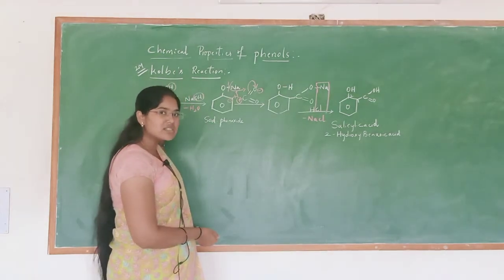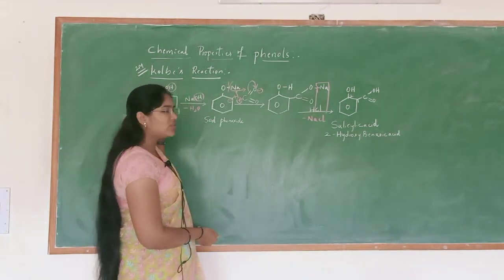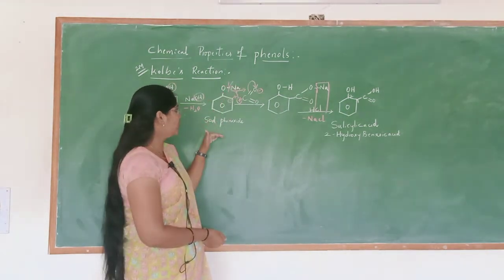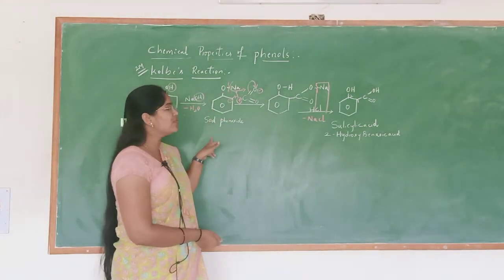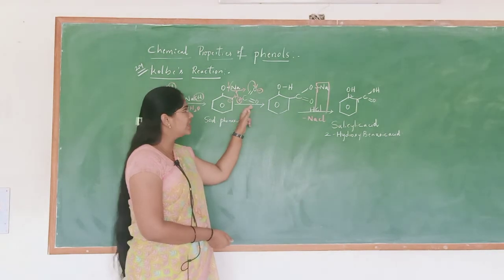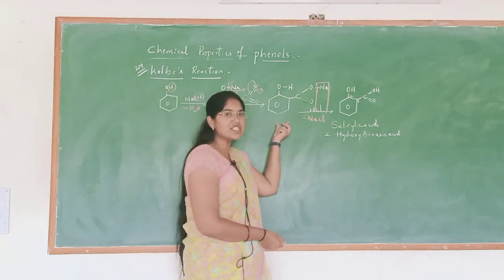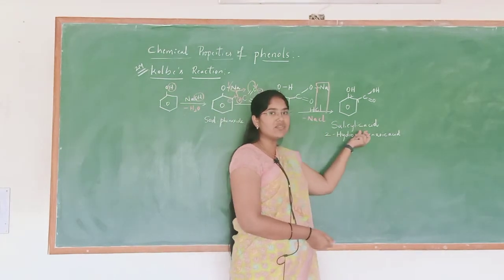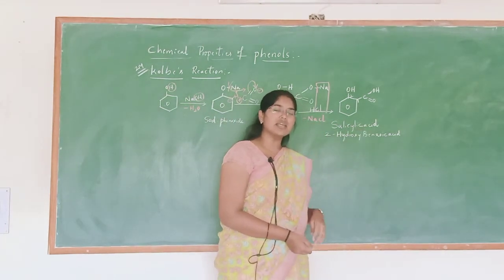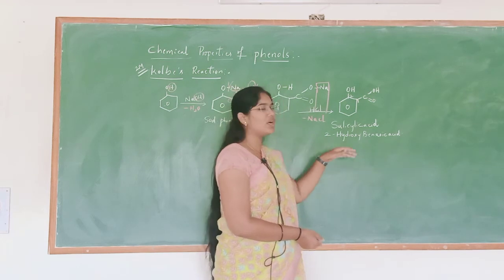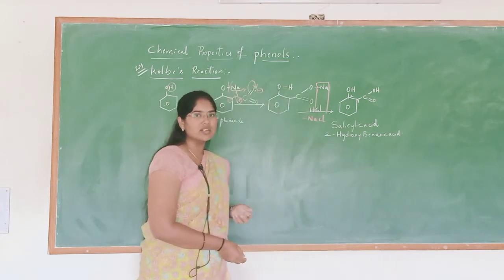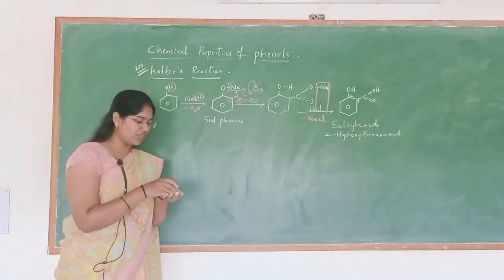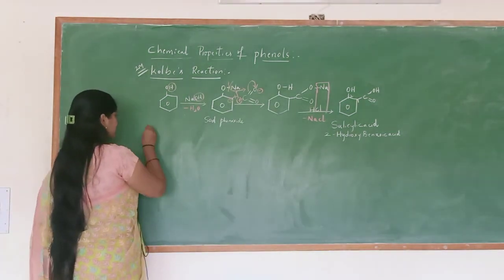In Kolbe's reaction, in the first step, addition of sodium hydroxide takes place to the phenol, which converts into sodium phenoxide. Then reaction with CO2 and acidification gives salicylic acid, also known as 2-hydroxybenzoic acid. Now we will see another most important chemical property of phenol — the Reimer-Tiemann reaction.